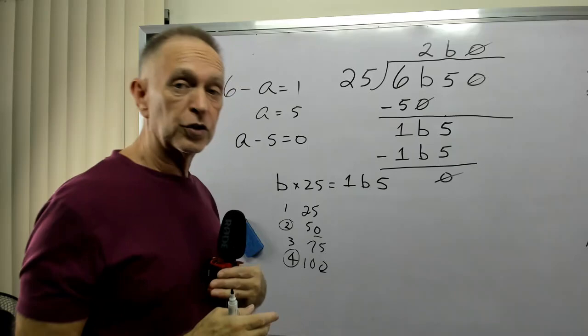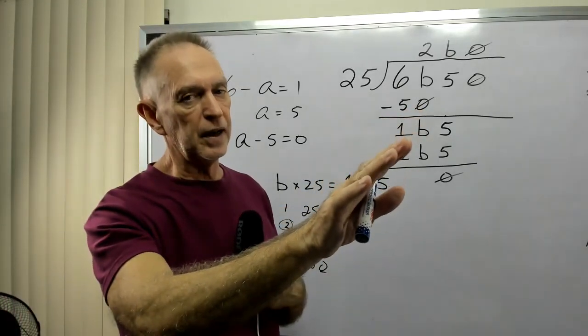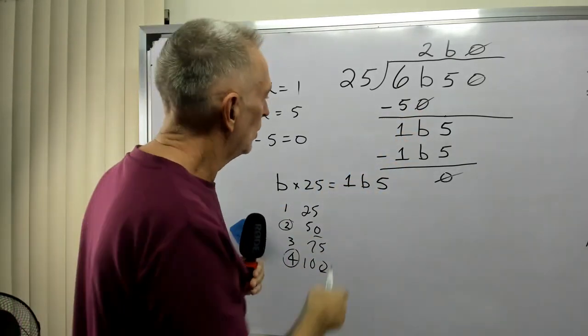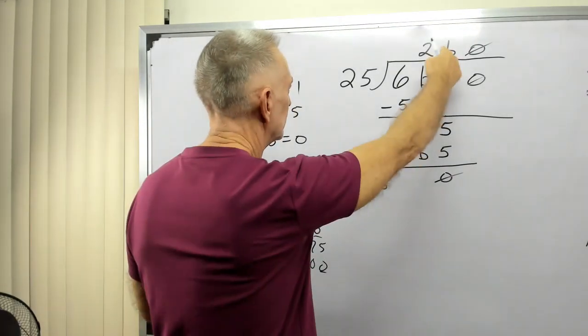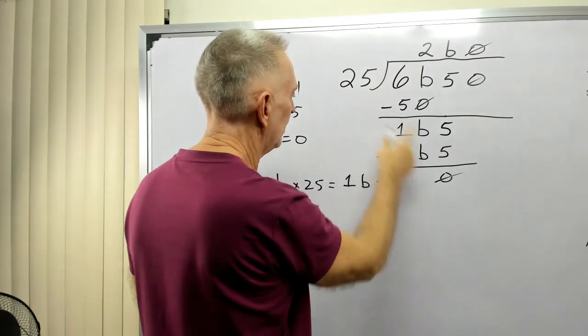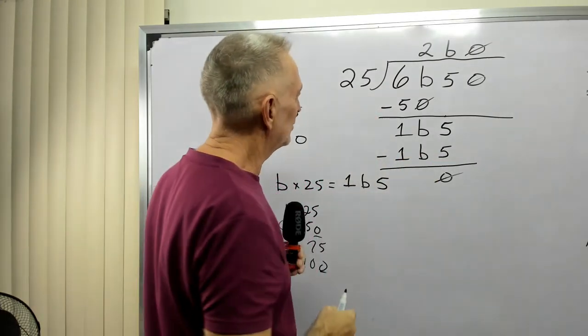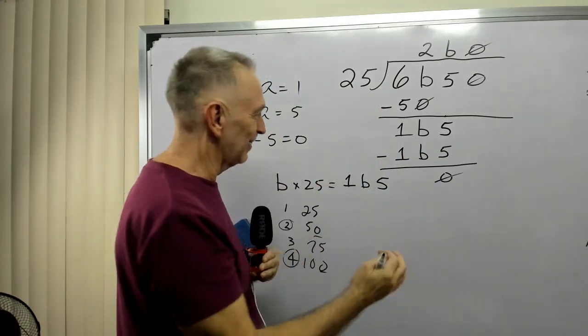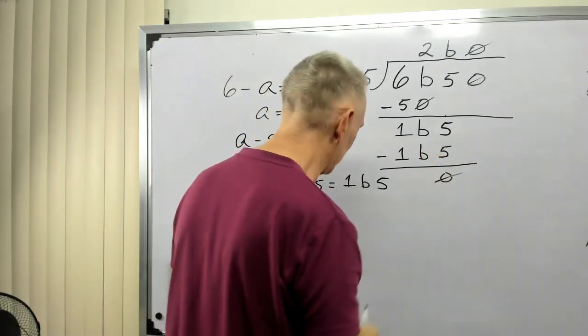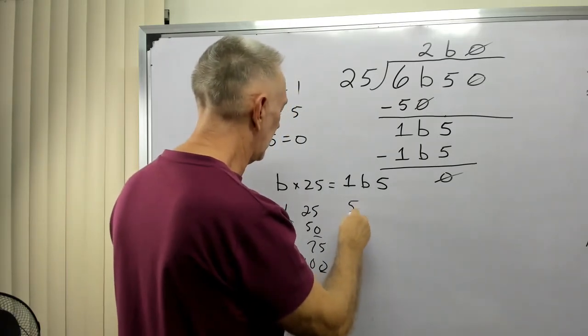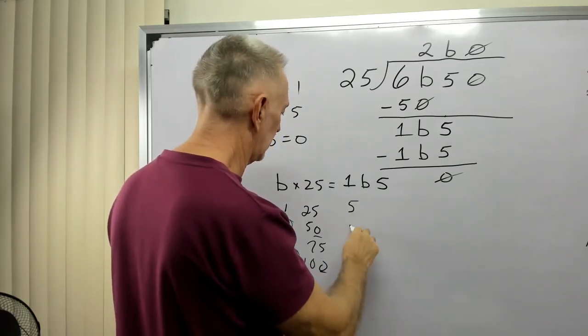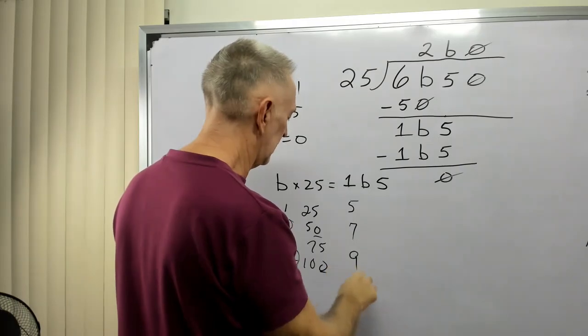And it also needs to be a number that when I multiply times 25, it gives me a number greater than 100. Now, a person could say, what if B is 0? 1, 0, 5. Well, 0 times 25 does not give me a three-digit number. It gives me 0. So that's out. So we could say it's 5, it can't be 6, it could be 7, or it could be 9.